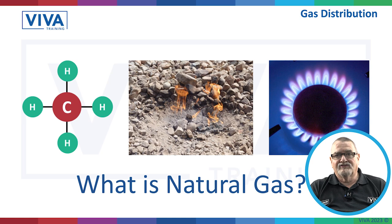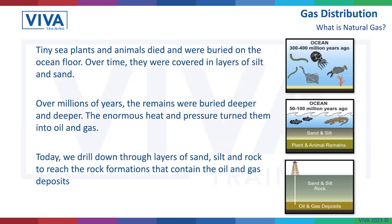Coming into the gas industry, we need to understand what natural gas is. So where did it come from? Millions of years ago, tiny sea plants and animals died. They were buried on the ocean floor. Over time, they got covered in layers of silt, sand and sediment, and over the years the sediment got deeper and deeper. Then with enormous amounts of heat and pressure, they turned into oil and gas. And that's what we're looking for now — that's what people go prospecting for.